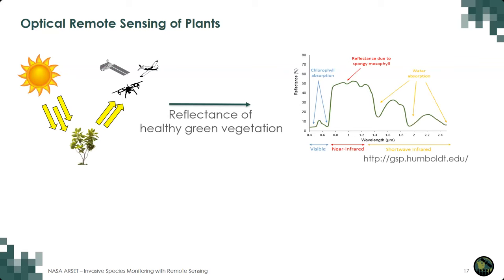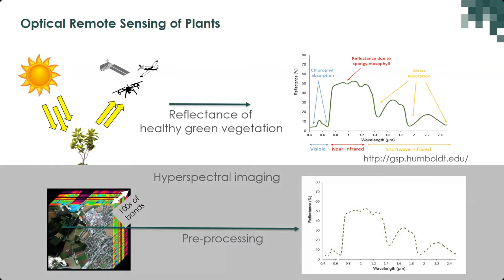This spectral profile can give us a lot of useful information about plants — for example, their water content, structure, or pigment content. If we build a sensor that captures this information with high detail using many narrow spectral bands, we have a hyperspectral instrument. This is different from multispectral remote sensing, where we have only a limited number of spectral bands.